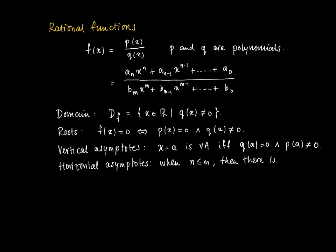A horizontal asymptote describes how the function behaves for arbitrarily large values of X. When F of X closes in on some specific value y equals B, we call that line a horizontal asymptote. For polynomials of equal degree, the horizontal asymptote equals a_n divided by b_n. If the degree of P is lower than the degree of Q, then the horizontal asymptote is y equals zero. You may ask: what happens if the degree of P is actually larger than the degree of Q?